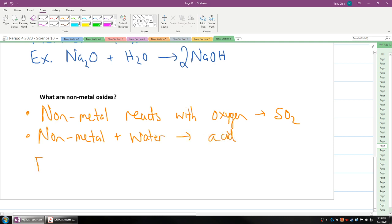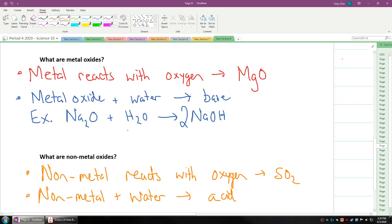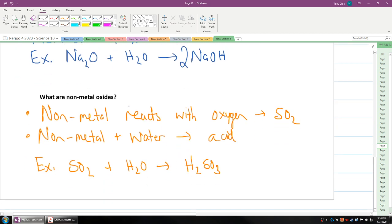So an example of this would be if you have SO2 plus H2O, this will form sulfurous acid, H2SO3. So this is the opposite, as you can see. When metal oxides react with water, they form a base, while non-metal oxides when they react will form an acid.